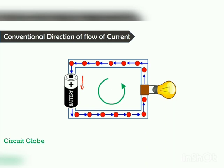But in actual practice, we take the direction of current from positive to the negative terminal of the supply. This is the conventional direction of flow of current.